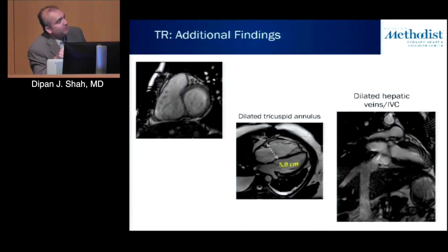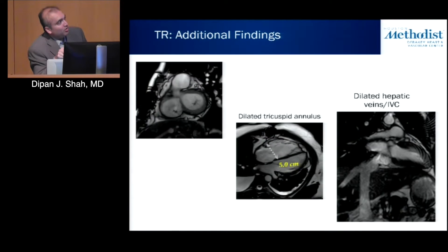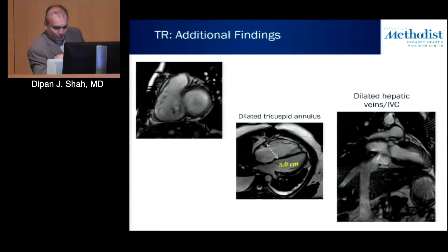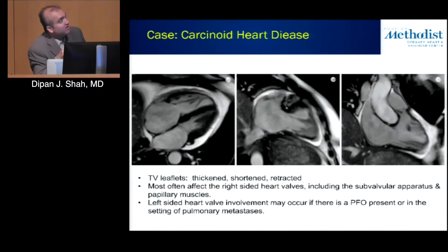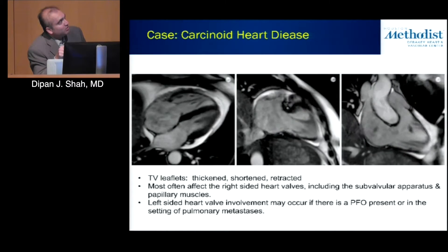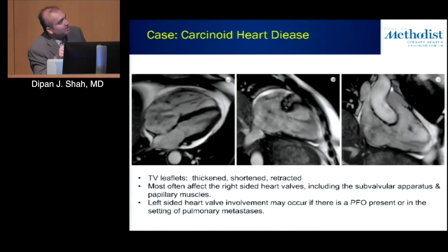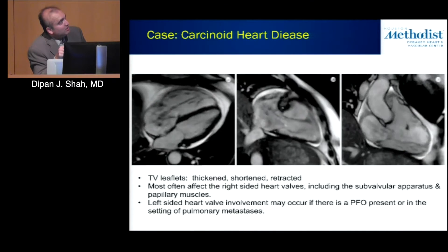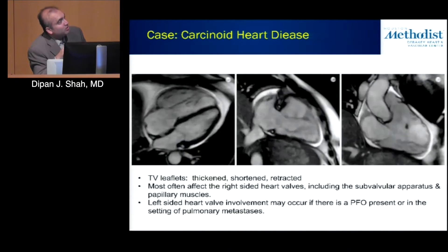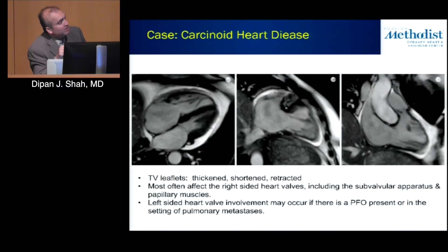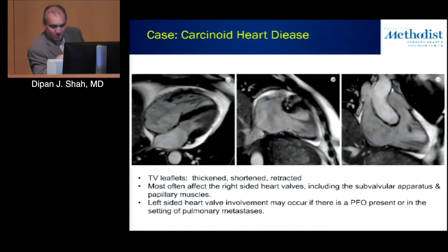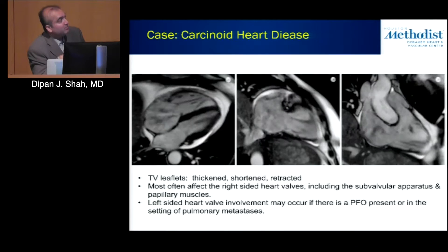CMR can also identify other findings such as a dilated tricuspid annulus, and can evaluate the IVC and hepatic veins — shown here as dilated in this example. In another case, the four-chamber view shows tricuspid valve leaflets that appear retracted and shortened, looking almost wide open with significant tricuspid regurgitation. Beyond the standard four-chamber view, additional RV two-chamber and RV three-chamber views allow interrogation of all tricuspid valve leaflets.